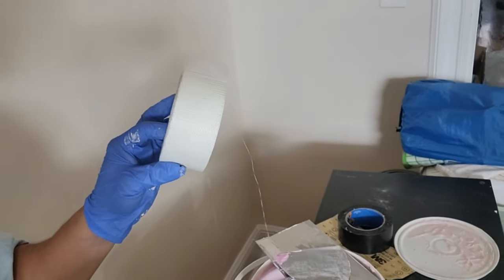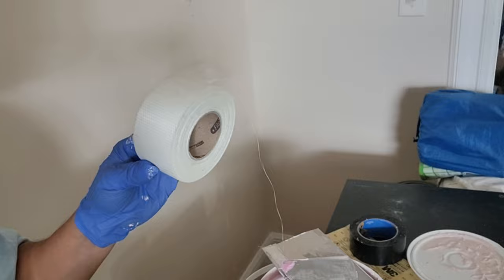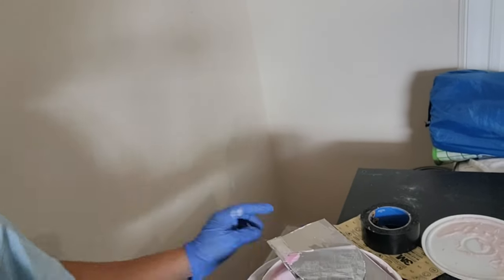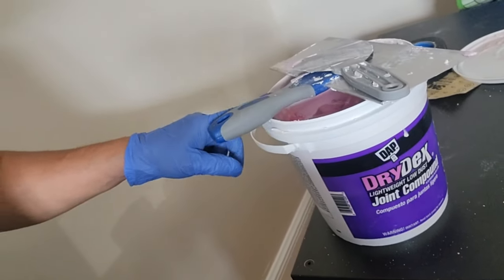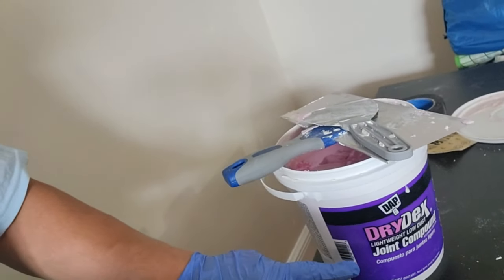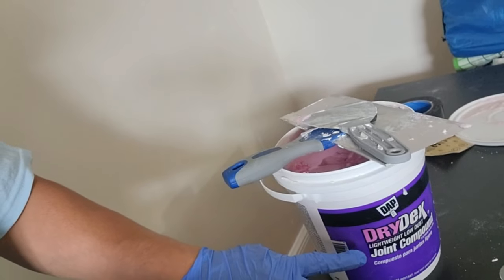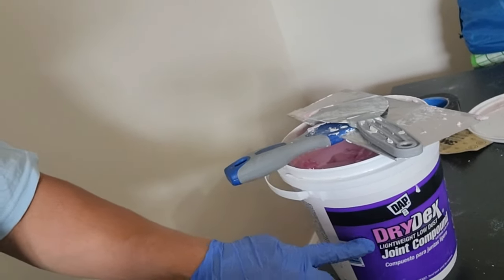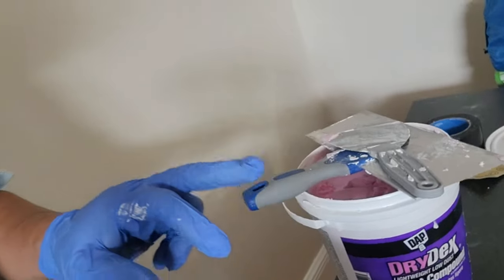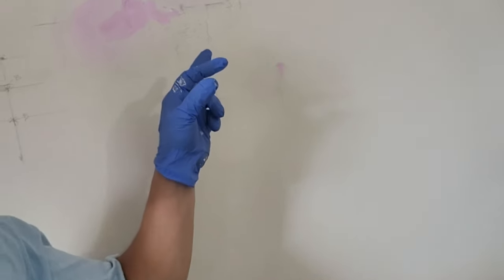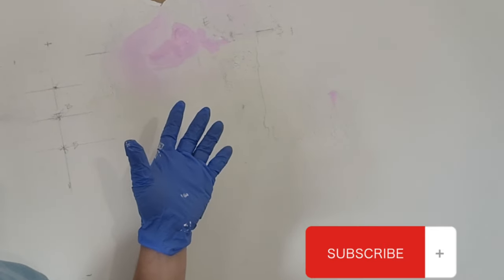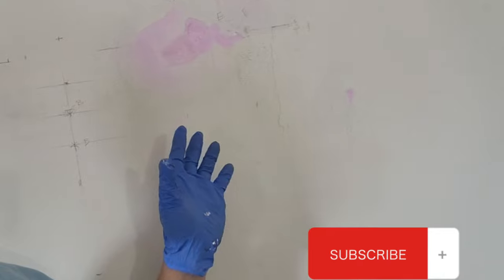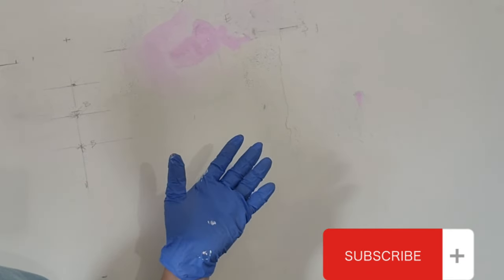Using a tape which is designed for patching walls and also some compound. Now this one is good since it actually starts as pink color, and as soon as it dries it actually turns to white, and that tells you that it's actually dry.